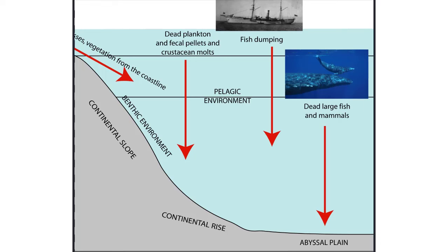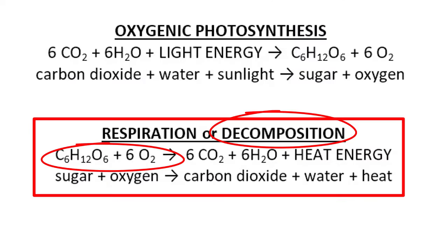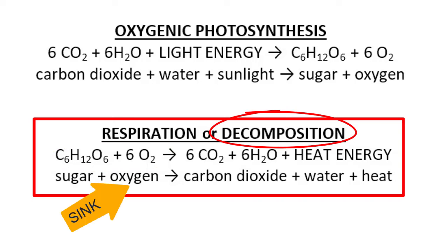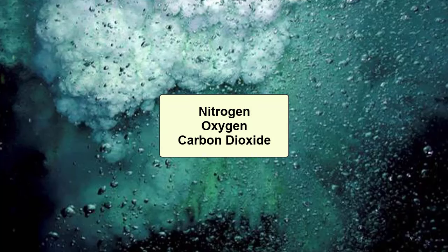Decomposition happens when the sugars in dead carcasses, feces, exoskeleton molts, and other organic debris are broken down in the presence of oxygen, mostly by bacteria. Same results: it removes oxygen and produces carbon dioxide.